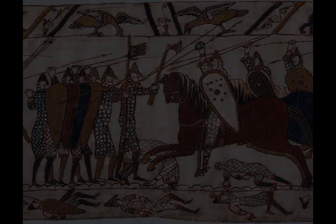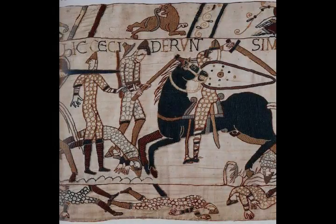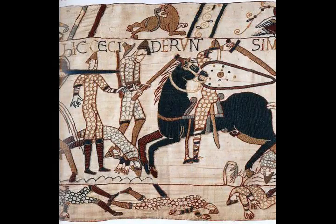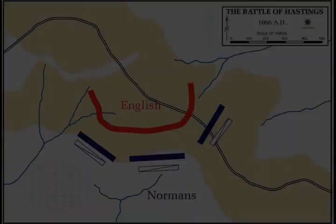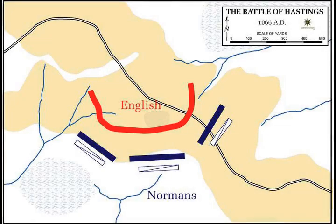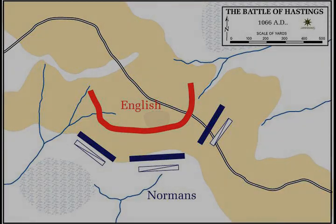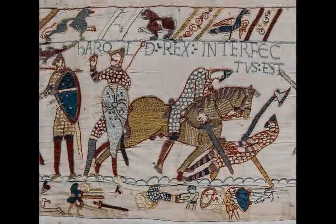Harold Hardrada of Norway also contested the succession. His claim to the throne was based on an agreement between his predecessor Magnus the Good and the earlier king of England Harthacnut, whereby, if either died without heir, the other would inherit both England and Norway. William and Harold Hardrada immediately set about assembling troops and ships for separate invasions.